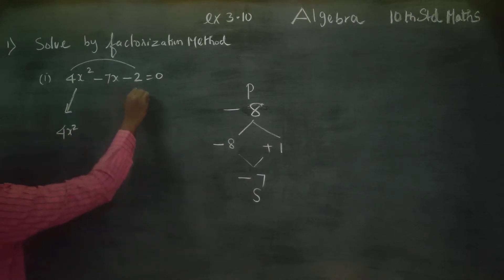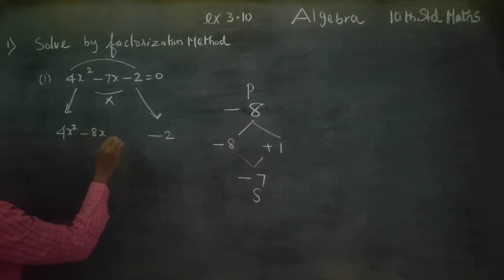4x squared minus 8x plus 1x minus 2 equals 0. Because of that, minus 8x plus 1x equals minus 7x. This is common.